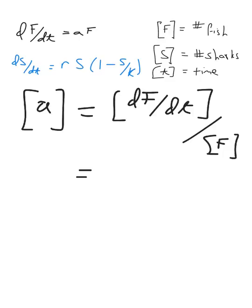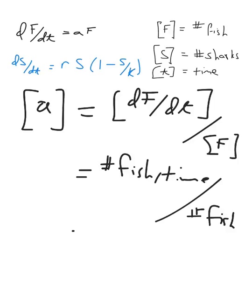What's the dimension of the derivative? It's the dimension of each of the things going into the fraction. So this is number of fish over time, all divided by number of fish. So the dimensions of a are 1 over time,